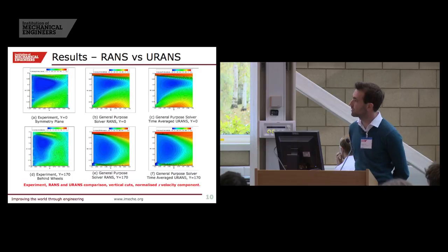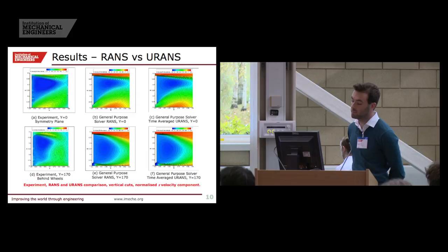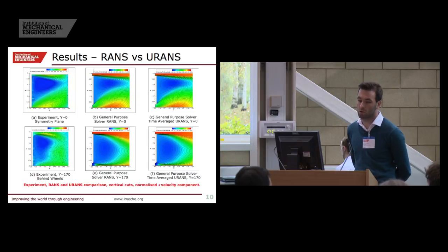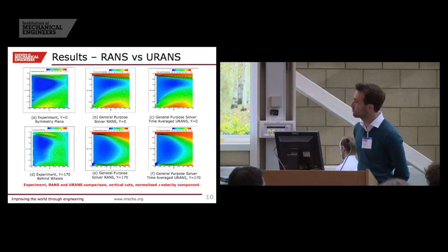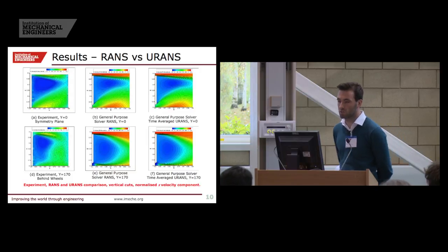Comparing the general purpose solver: we've got U-RANS and time-averaged open source RANS on the right. You can immediately see very little difference between the U-RANS and RANS cases. This was okay because we started with reasonably accurate flow compared to the experiment in the RANS. However, where we'd expect to see the difference — in the plane behind the wheels — there is no difference whatsoever. The shape of that structure is the same in the RANS and the U-RANS case.